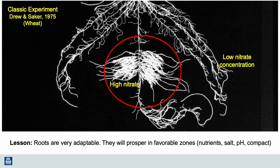The lesson here is that roots are very adaptable. They prosper wherever they find favorable conditions. These favorable conditions could be, for example, surrounding a band of phosphorus fertilizer, in a limited soil zone right under a drip emitter, or maybe part of a planted bed that might have lower salinity.